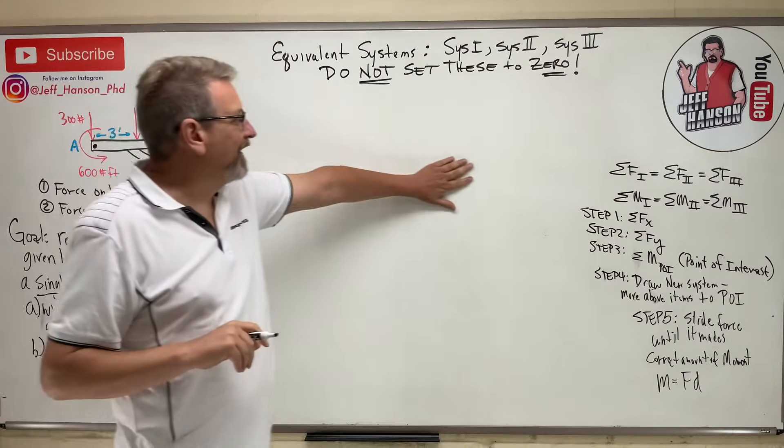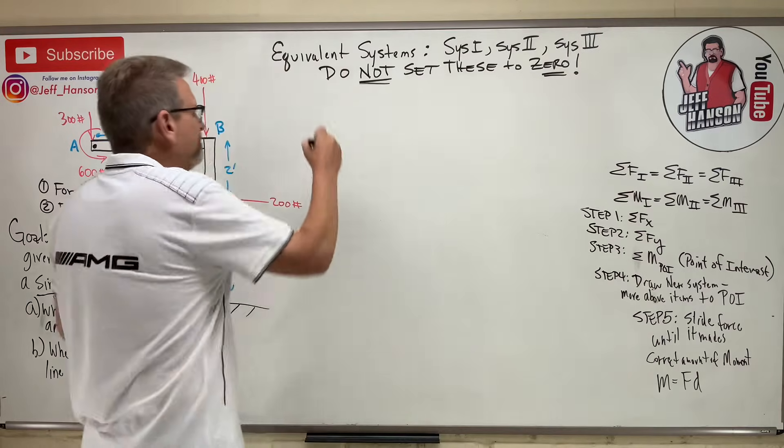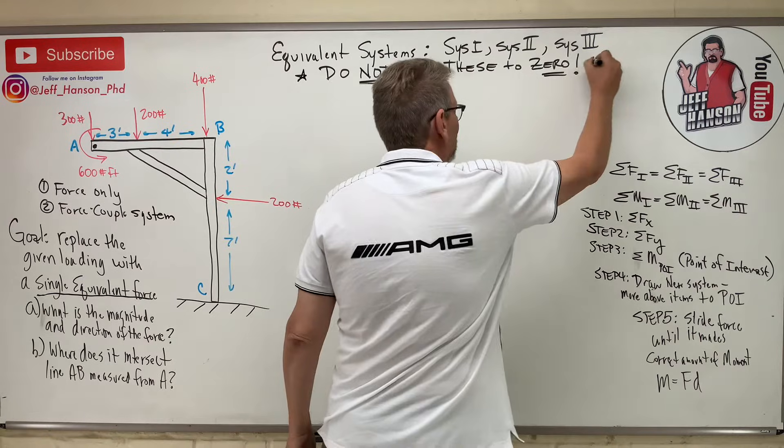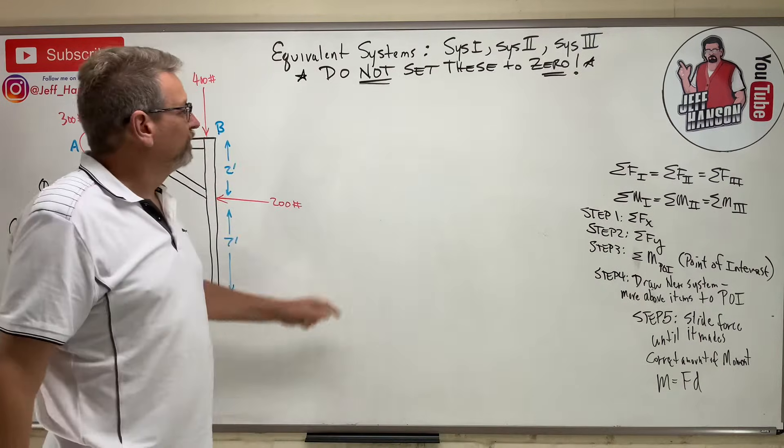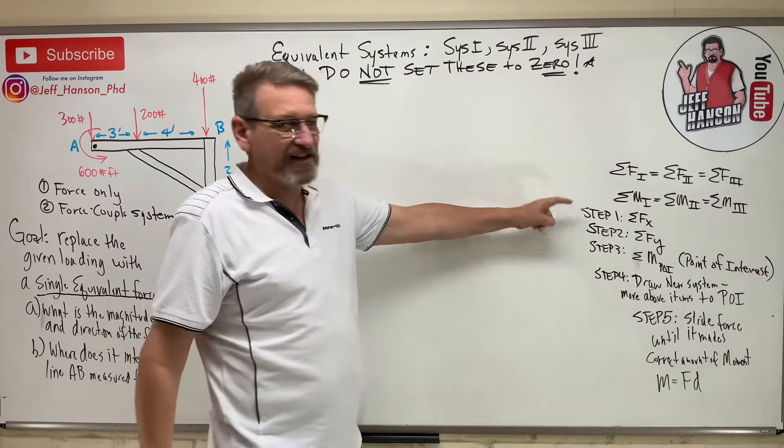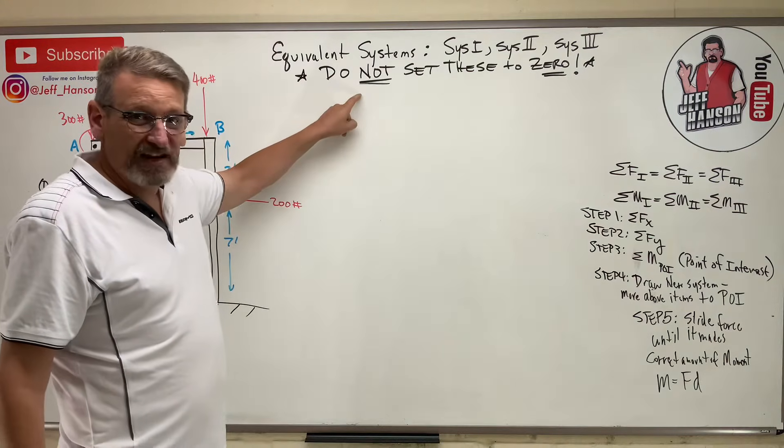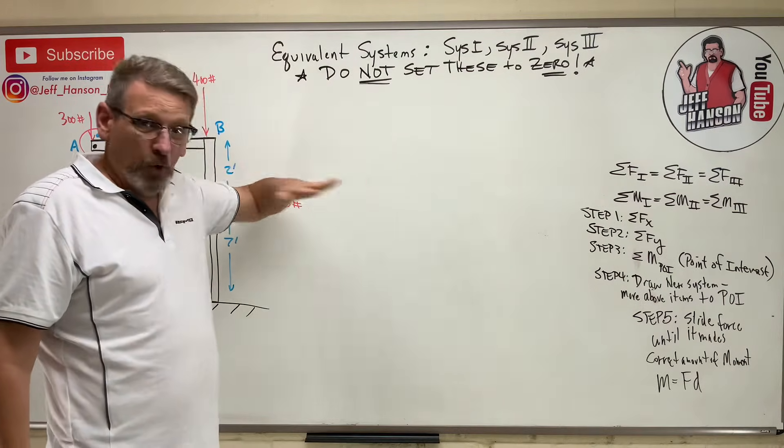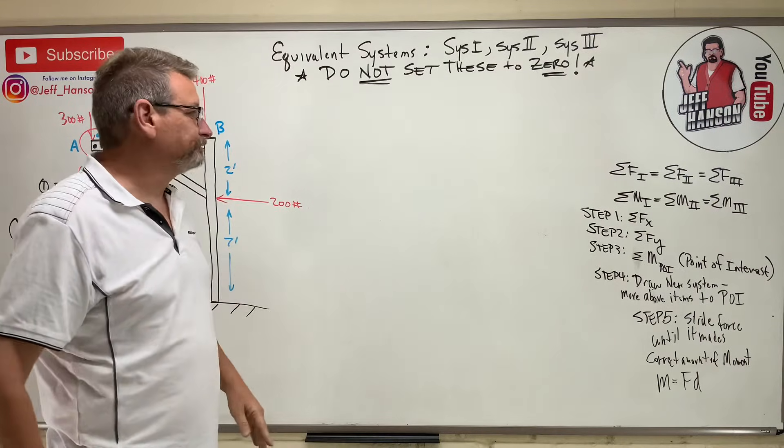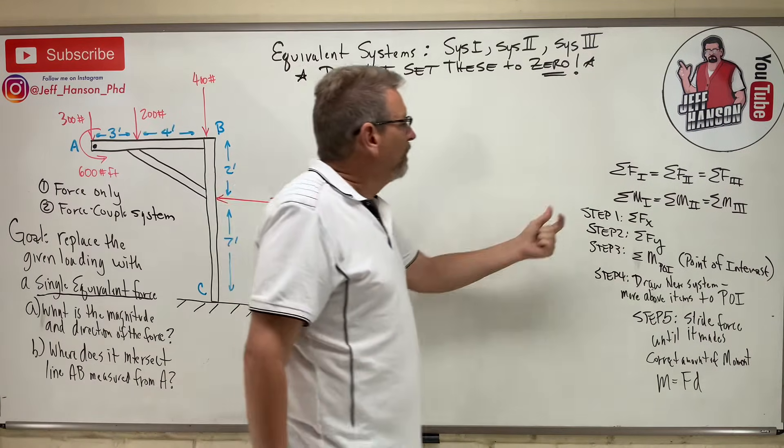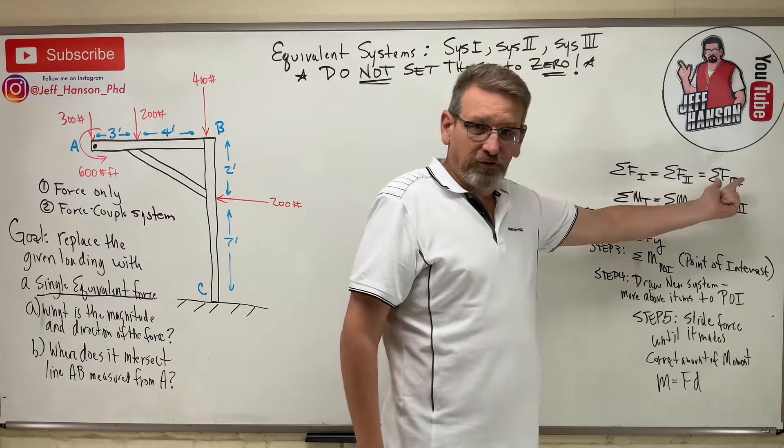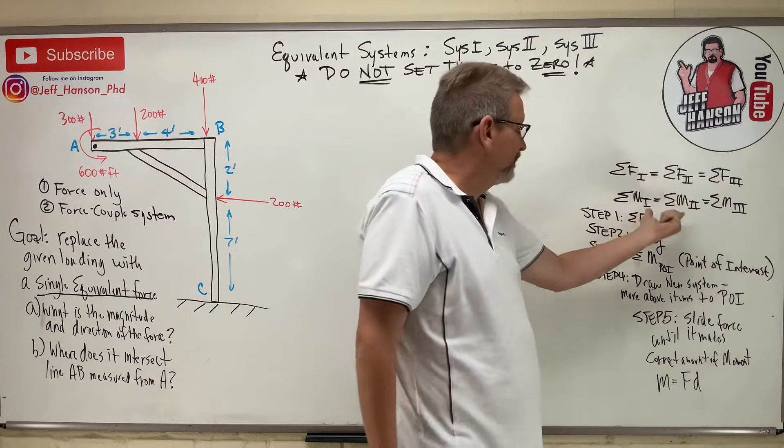Now I left all this on the board from last time. Here's the biggest screw up that I see students making right there. When we do these problems, step 1 is sum the force in the x, and students want to set that equal to 0. Don't set these problems to 0.